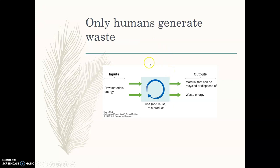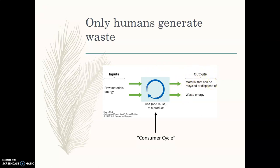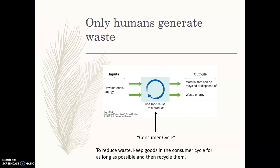If we look at waste as a system, your inputs are raw materials and energy. Then you have the use and reuse of a product until it's worn out or no longer usable, and then it becomes an output that could be recycled, disposed of, or waste energy. We call this the consumer cycle — the use and use of materials before they're made into waste. To reduce waste, we want to keep goods in the consumer cycle for as long as possible and then recycle them.